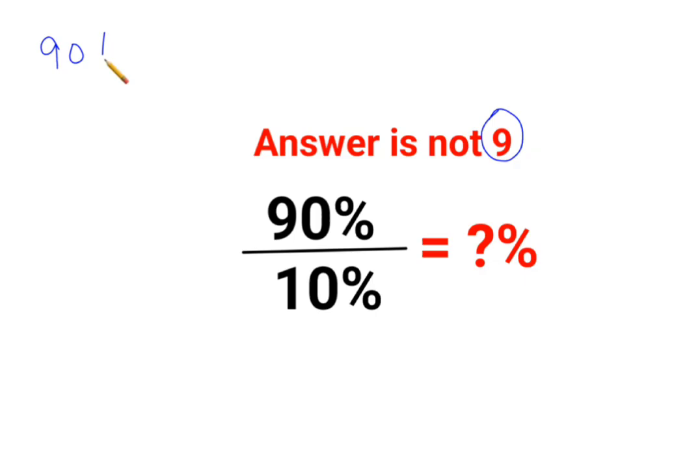whenever you have a percent sign ahead of a number, you can convert it into a fraction by dividing it by 100.